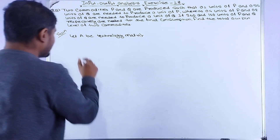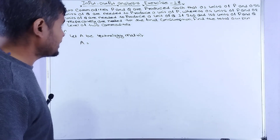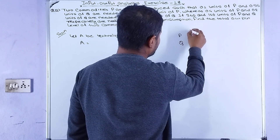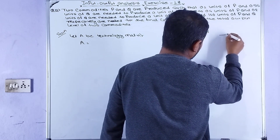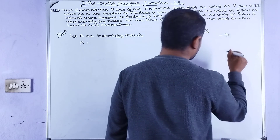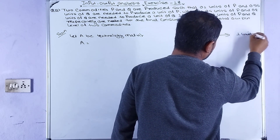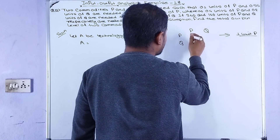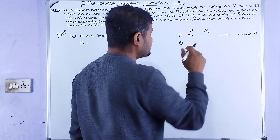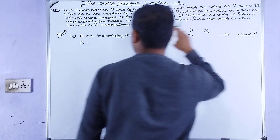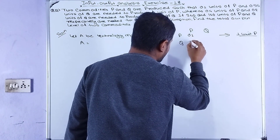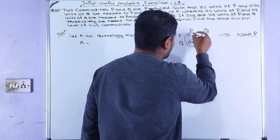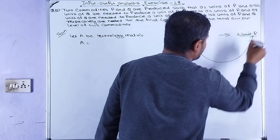For the technology matrix, we note that to produce one unit of P, we need 0.1 units of P as input — so 0.1 is the first entry. And 0.55 units of Q are needed — so 0.55 is the input for Q. This gives us the first column of the technology matrix A.